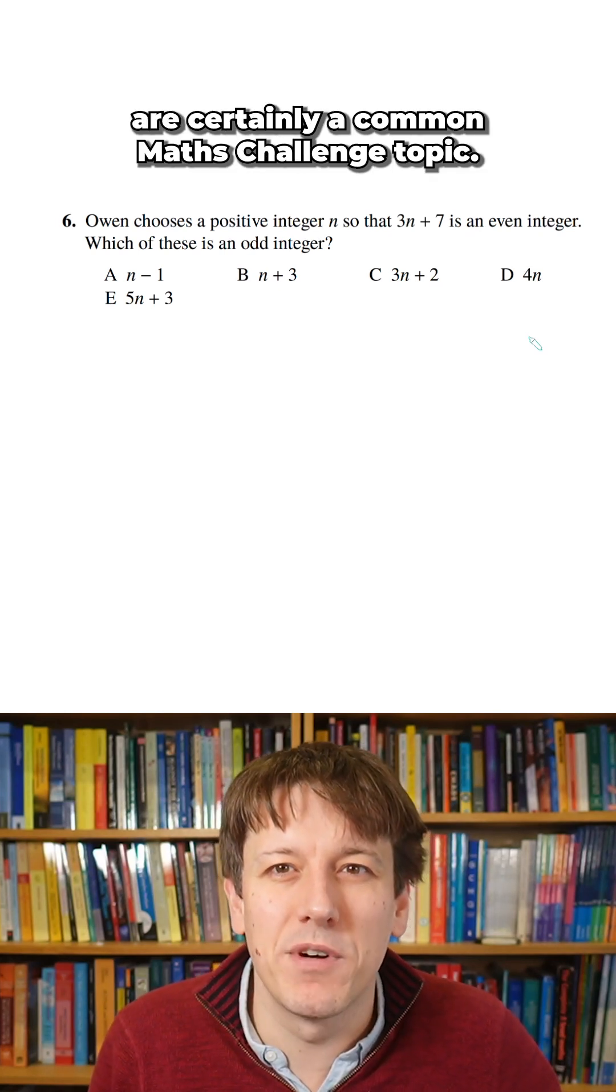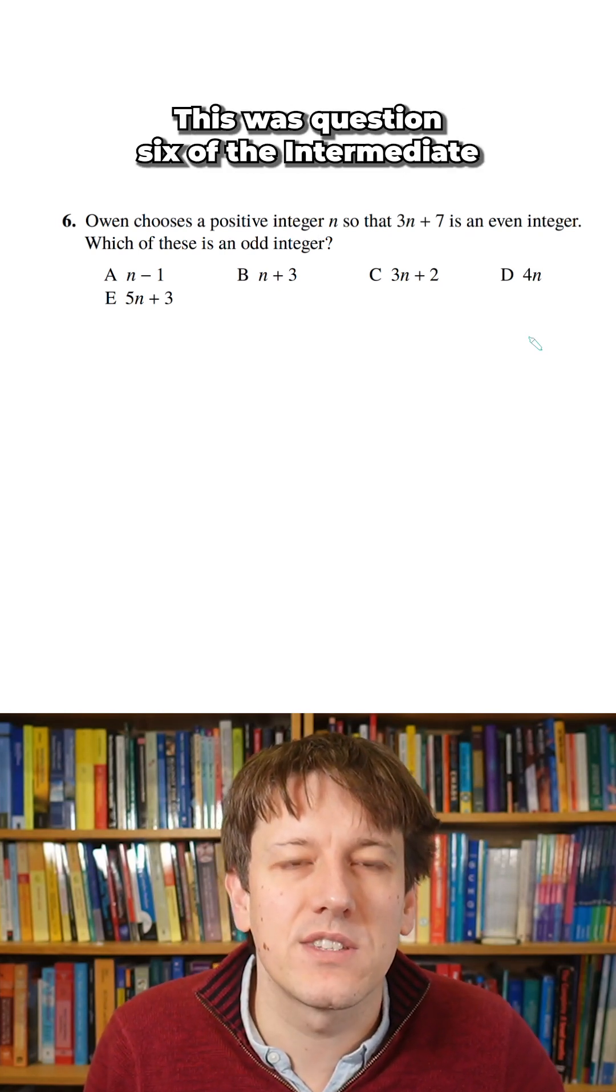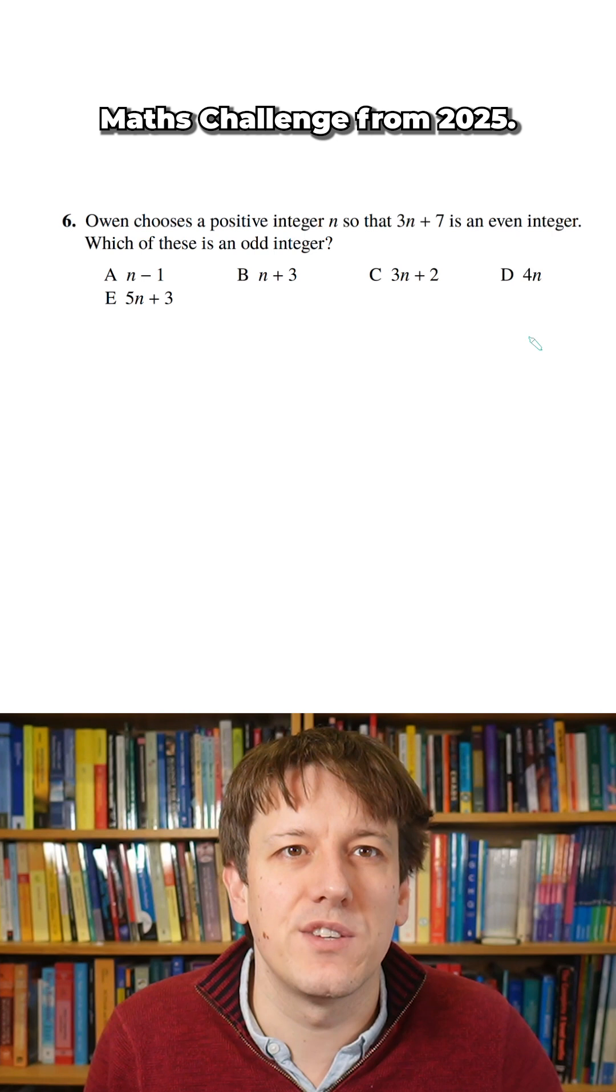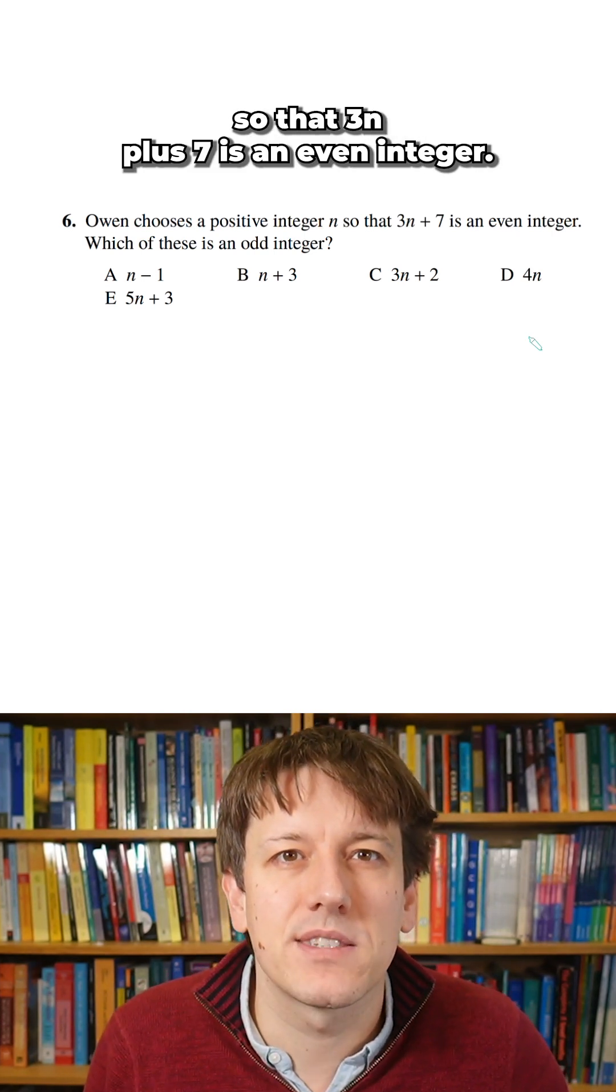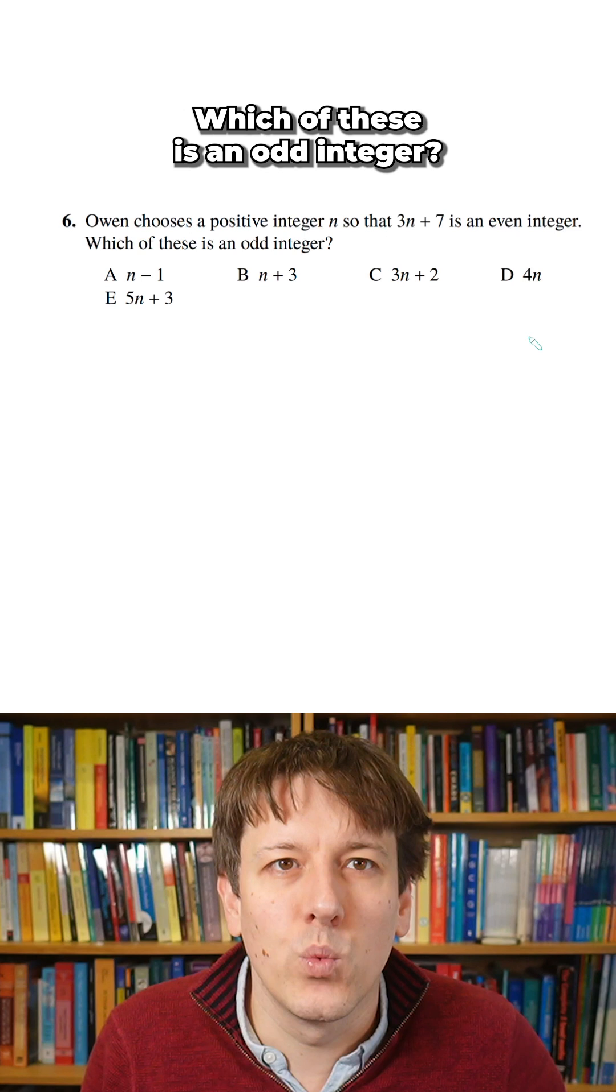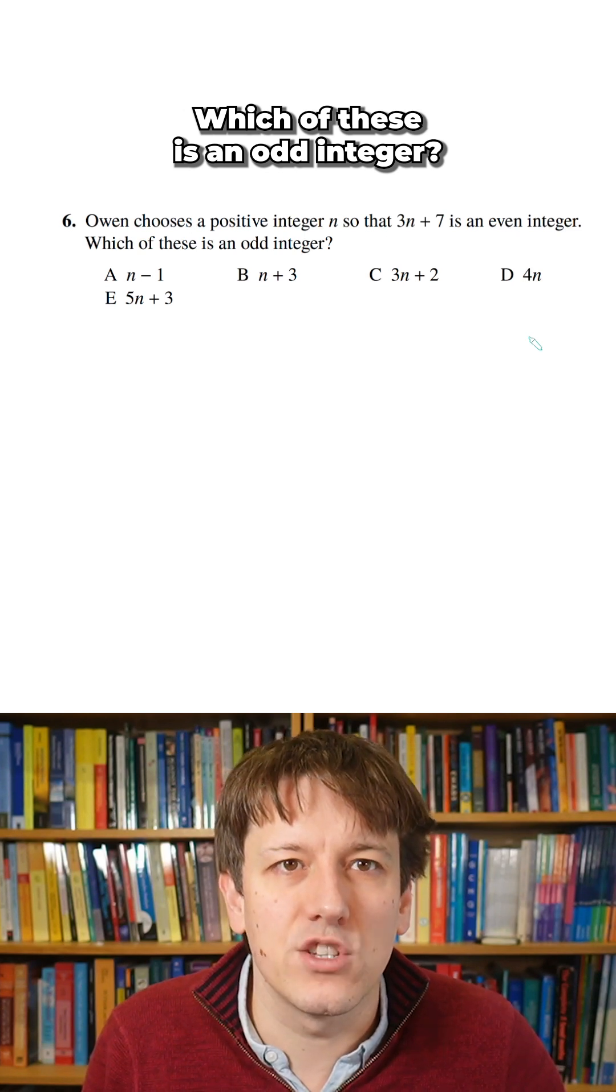Odds and even number questions are certainly a common maths challenge topic. This was question 6 of the intermediate maths challenge from 2025. Owen chooses a positive integer n so that 3n plus 7 is an even integer. Which of these is an odd integer?